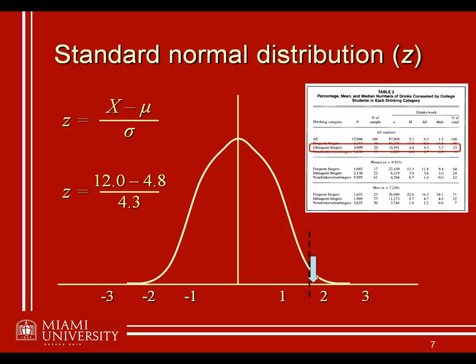So now, if you meet somebody that's drinking 12 drinks in a given week, you can say, this person is either one of the most extreme infrequent binge drinkers that we've found, if indeed our null hypothesis is true, that this person does come from the distribution of infrequent binge drinkers. Or else, you have to reject that null hypothesis.